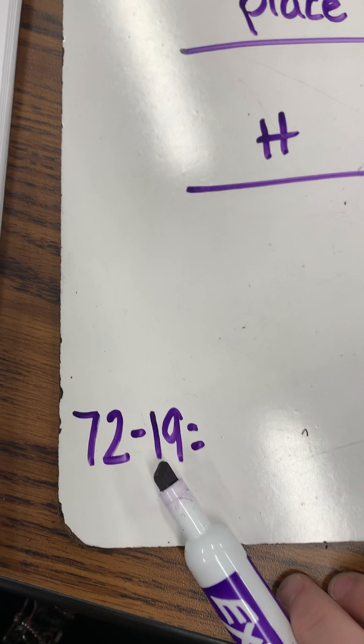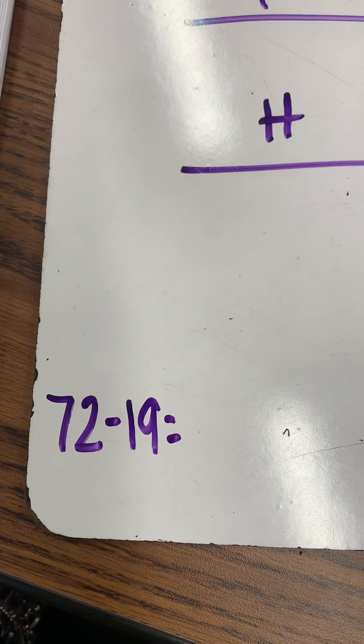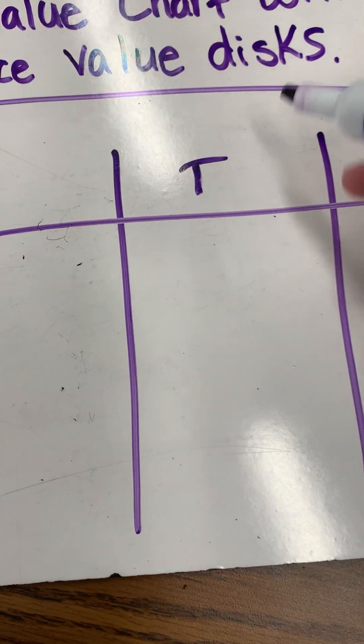I used the same problem as we used in the other video, but I just made it subtraction. So again, we are going to draw our 72 on our place value chart.